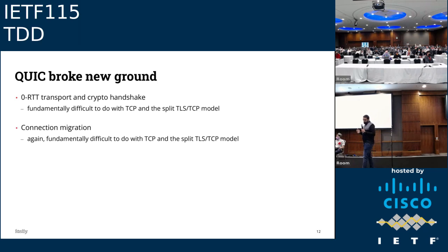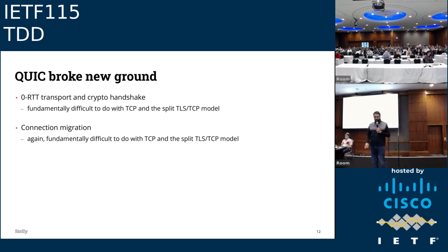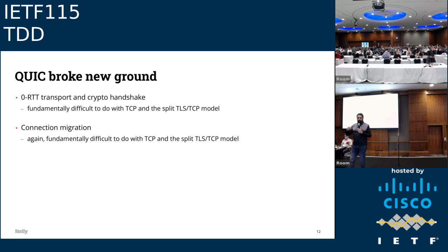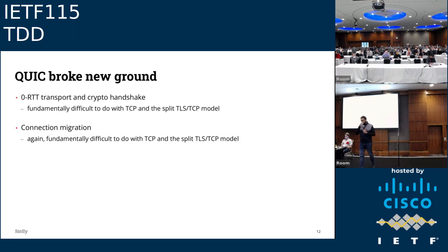Connection migration was another thing we wanted for 20 to 25 years to build into transport technologies, and we finally got it in QUIC. This is fundamentally difficult to do with TCP in the split TLS-TCP model, in part because of endpoint identities. The IETF has done this with MPTCP, but you still have to play nice with operators, and we can't wait for every operator and every middlebox vendor to come on board before we consider a protocol deployed — that's too long a pole. So connection migration is deployed and being used already.